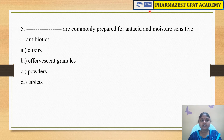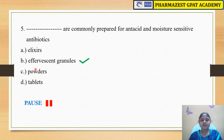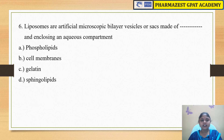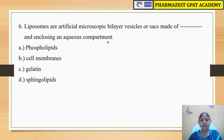The next question is: dash are commonly prepared for antacid and moisture sensitive antibiotics. The options are A) elixirs, B) effervescent granules, C) powders, and D) tablets. The answer is effervescent granules. Effervescent granules are prepared for antacid and moisture sensitive antibiotics.